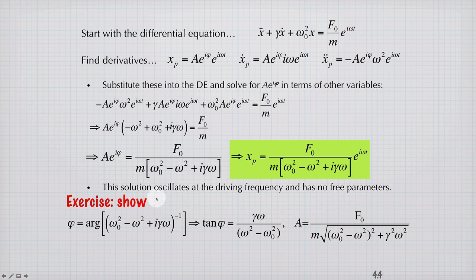As an exercise, I'll let you show that phi can be expressed in terms of the parameters of the oscillator like this, and A, the amplitude of the response, can be expressed like this.